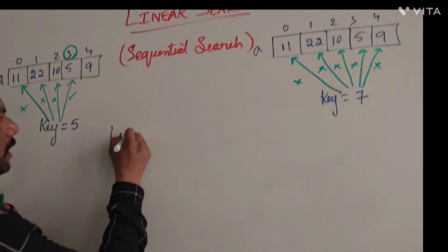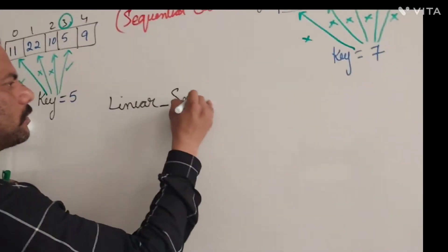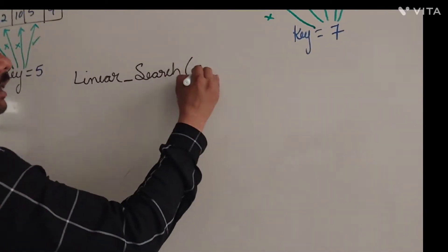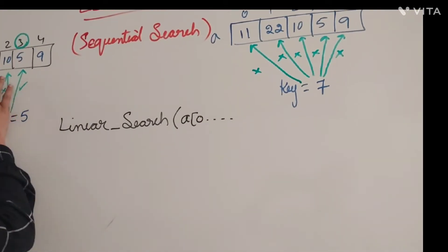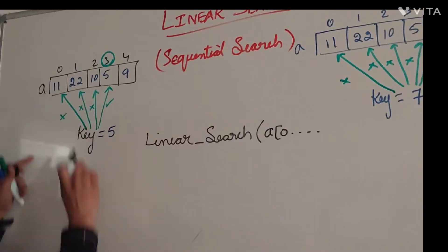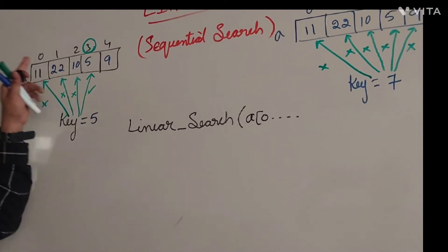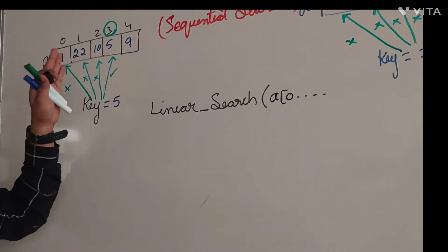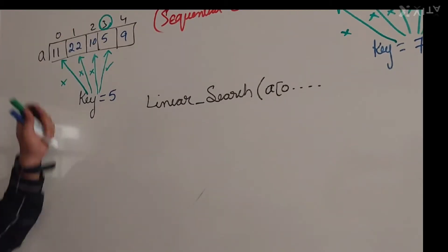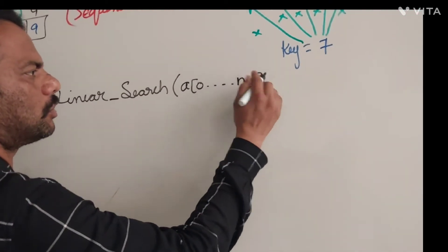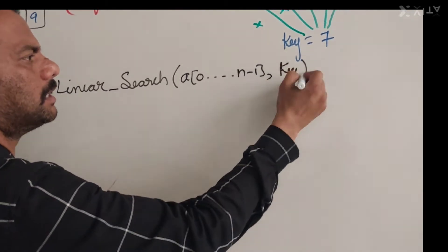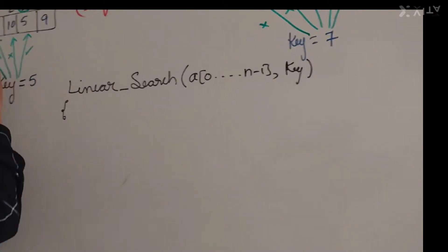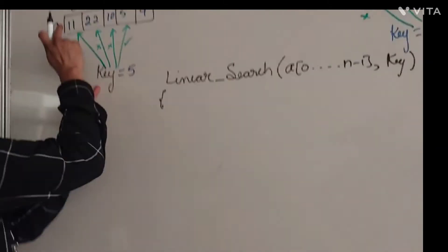Now for the algorithm, I will name it linear_search. The parameters are: the array running from index zero to n minus one (for five elements: zero to four; for ten elements: zero to nine; for n elements: zero to n minus one), and one given key element. These are the two parameters we need to pass to this algorithm.